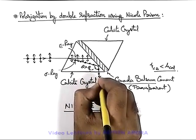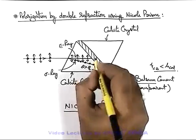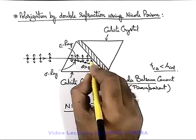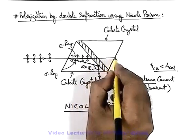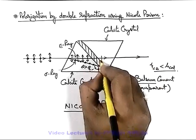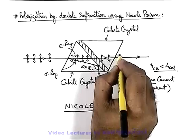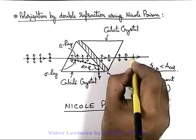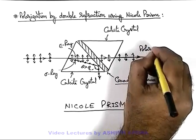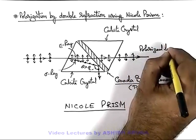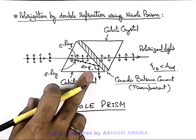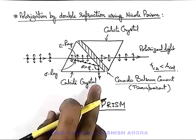So the ordinary ray suffers total internal reflection and it comes out of the Nicol prism. The E-ray, which is not incident at an angle greater than the critical angle, passes through the cementing layer, and finally with a little deviation, the ray having vibrations in the plane of incidence passes through. This is the polarized light which comes out from the Nicol prism, and by using the phenomenon of total internal reflection the O-ray is separated.